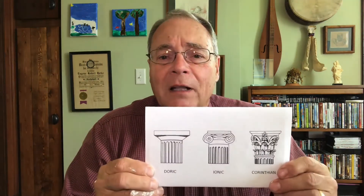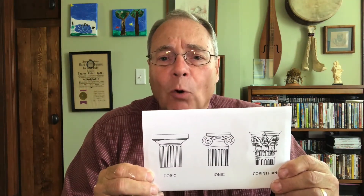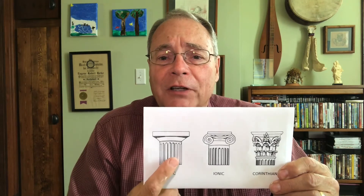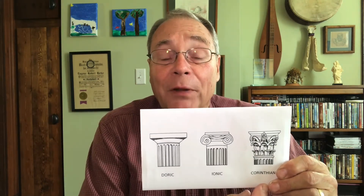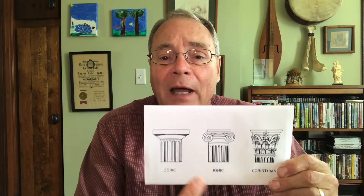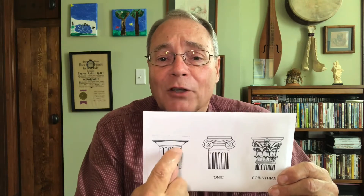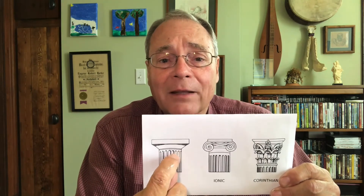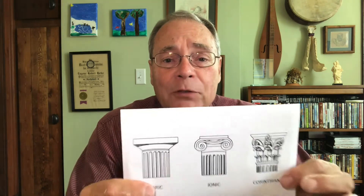I'm sure you're all familiar with the three classic Greek orders of architecture — the Doric, the Ionic, and the Corinthian — and you know how the Ionic is a little more ornate than the Doric, and the Corinthian even more so. The Corinthian is what I want to talk to you about today.